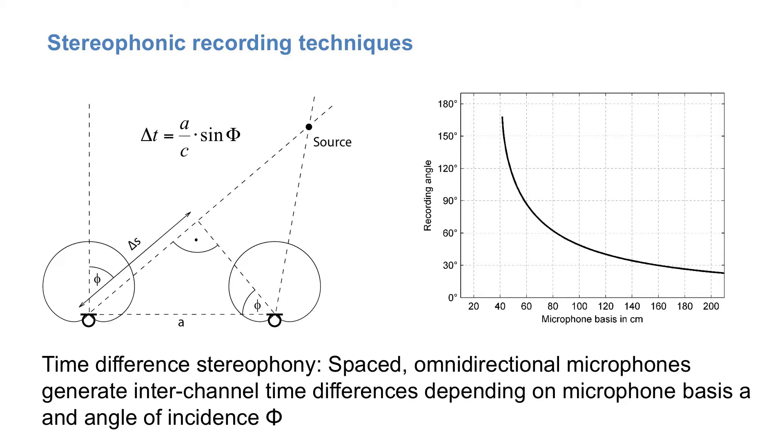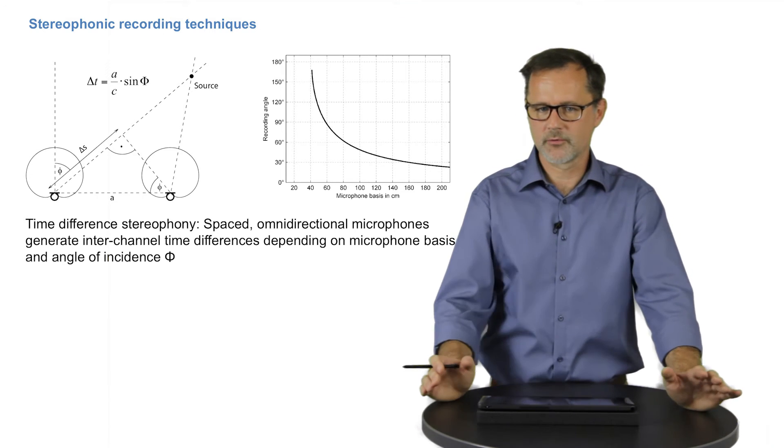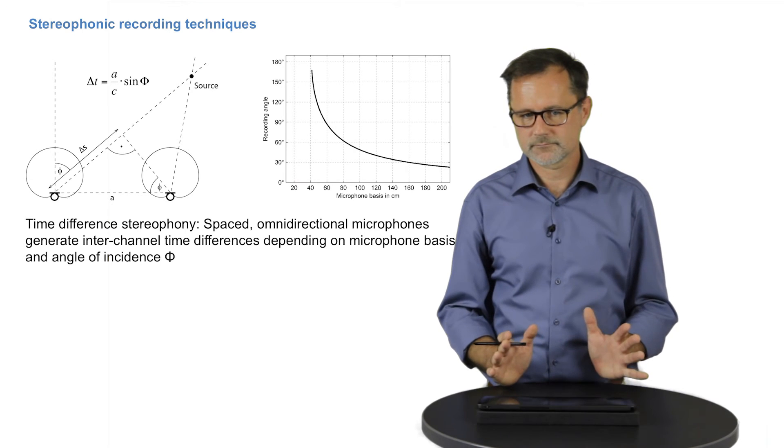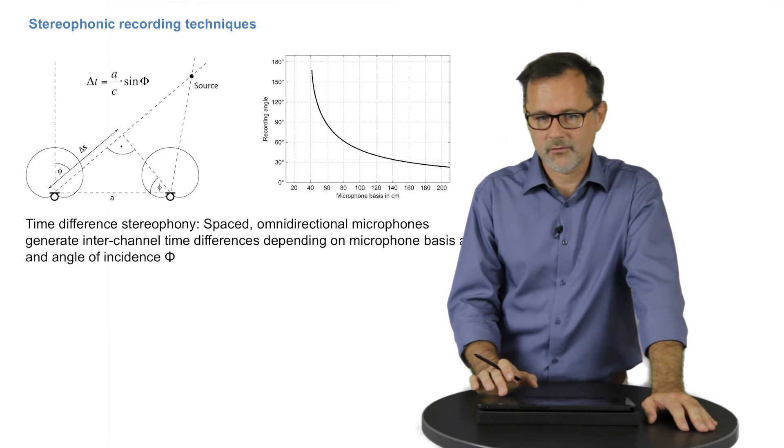From the recording angles, you can see what happens if you use two microphones at ear distance, which I mentioned as the result of confusing interaural and interchannel differences. So below 40 cm microphone spacing, the recording angle gets infinitely large, which means that such a configuration is not able to produce a sound image which fills the stereo panorama at all. To reach this, you need a microphone spacing of at least 40 cm.